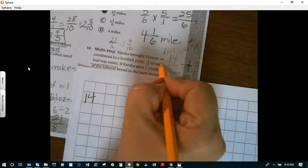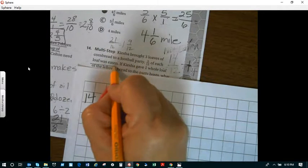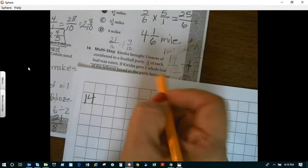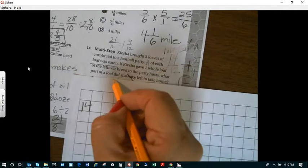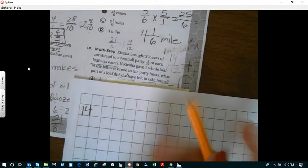Keisha bought three loaves of cornbread to a football party. Five-twelfths of the loaf was eaten. If Keisha gave one whole loaf of the leftover bread to the party host, what part of the loaf does she have left to take home?